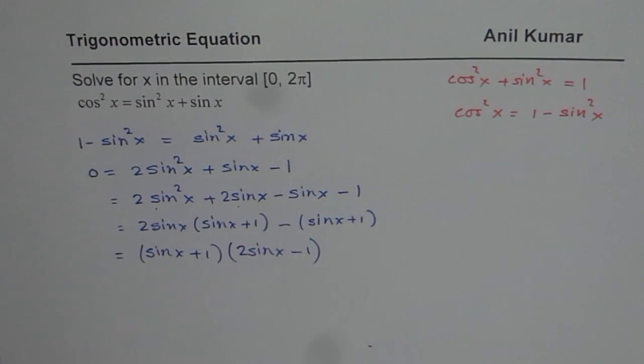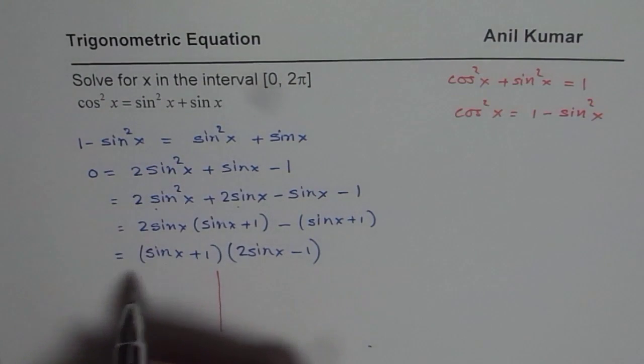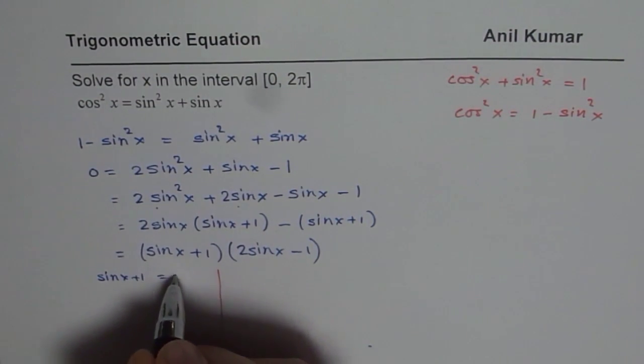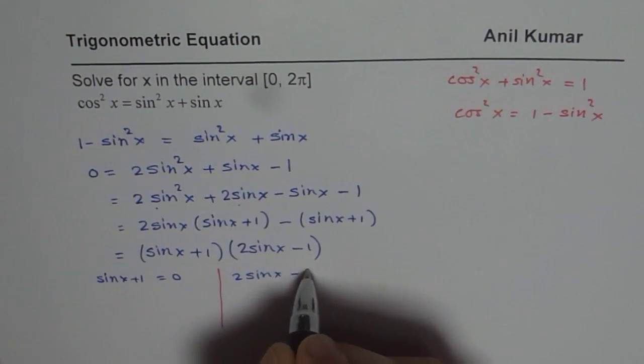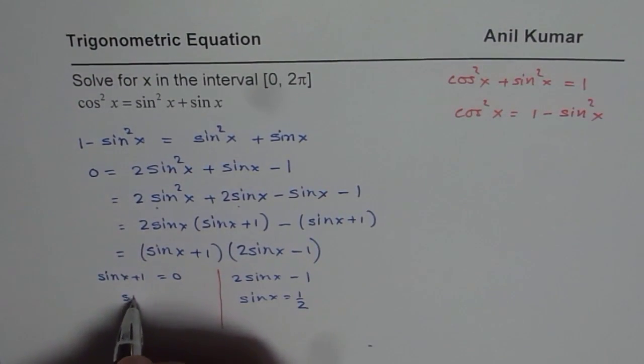That really means that we have to solve for two equations from here after. One of them is sin x + 1 = 0. And the other one is 2sin x - 1 = 0. And that gives us sin x = 1/2. And this gives us sin x = -1.